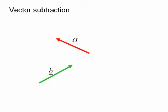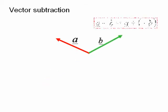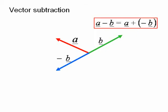Say we want to subtract two vectors a and b. We first write a minus b as a plus minus b. Remember that the vector minus b is the same magnitude as b but in the opposite direction or sense.